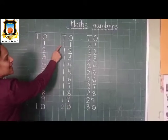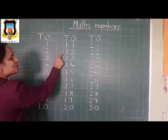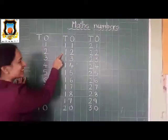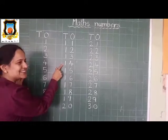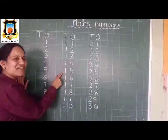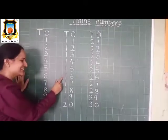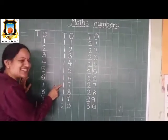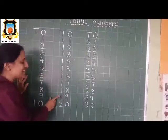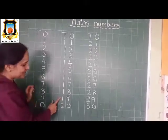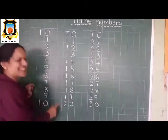Now I will teach you how to say 11 to 20. Say after me everyone: 10 and 1, 11. 10 and 2, 12. 10 and 3, 13. 10 and 4, 14. 10 and 5, 15. 10 and 6, 16. 10 and 7, 17. 10 and 8, 18. 10 and 9, 19. 10 and 10, 20. Very good.